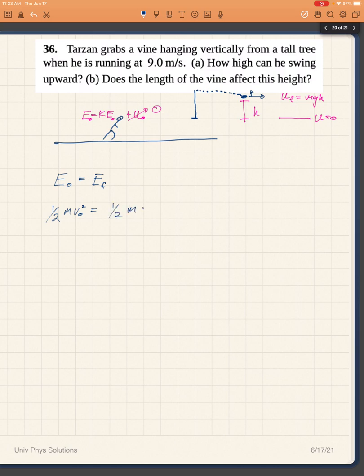It's going to be one half m v final squared, but we expect that to be zero, plus now Tarzan does acquire some potential energy mgh. We see that the masses will cancel, and so we have one half v zero squared equals gh. So the height will be given by v zero squared divided by 2g.